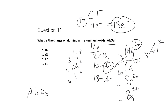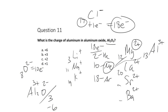So in Al₂O₃, aluminum forms the common +3 cation. Oxygen has atomic number 8 — gaining two electrons brings it to 10 electrons, matching neon, forming the oxide ion with a 2− charge. Three oxide ions give a total −6 charge, counterbalanced by two aluminum 3+ cations giving +6. So a stable neutral compound has charges that cancel.